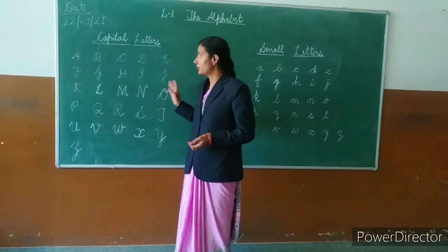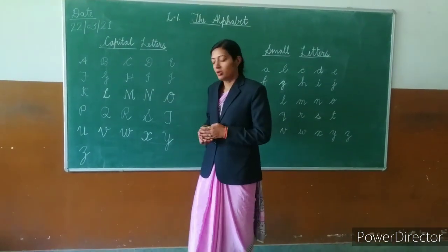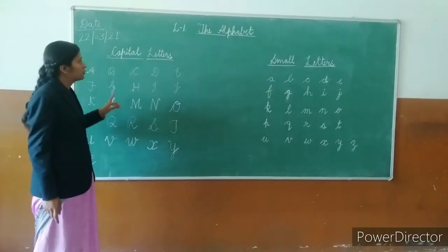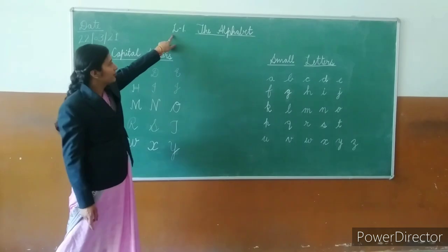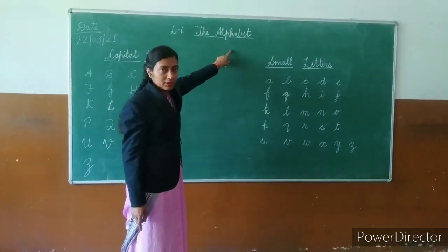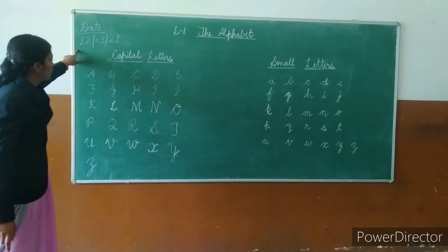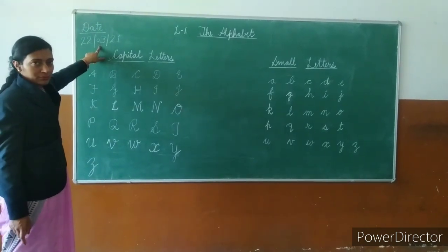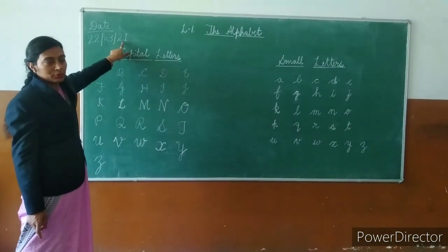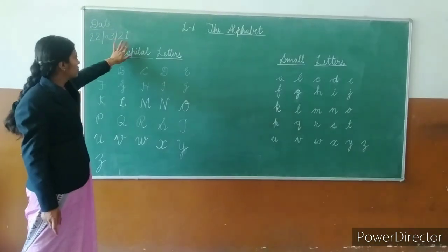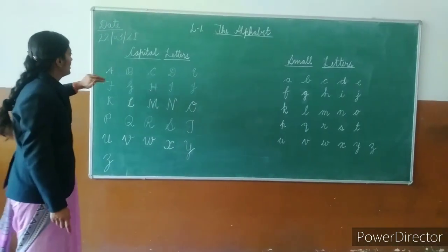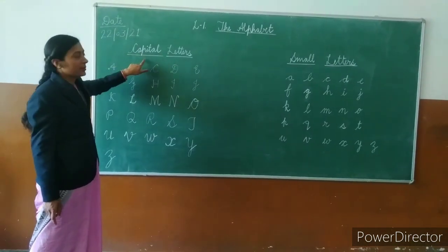So students, look at your fair notebook. In your fair notebook this is the first fair notebook. First you have to write lesson number 1, then write the lesson name: The Alphabet. Write the date as well. Then write capital letters.